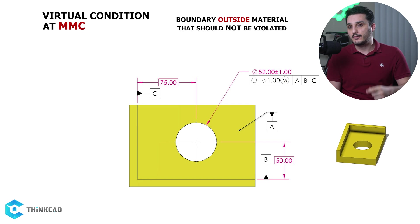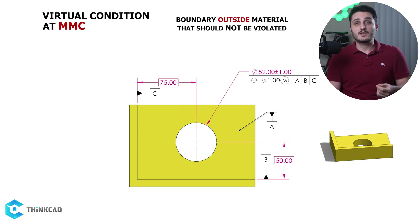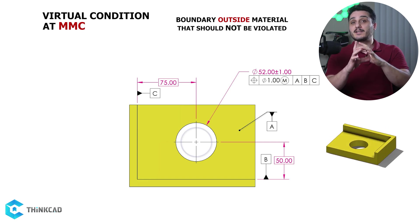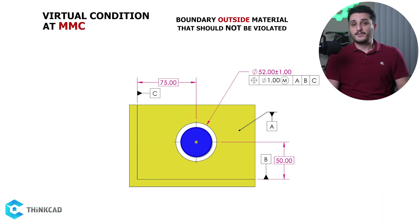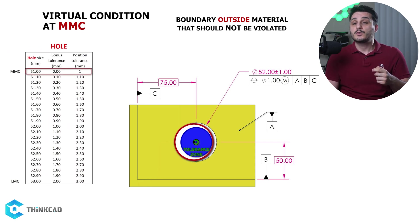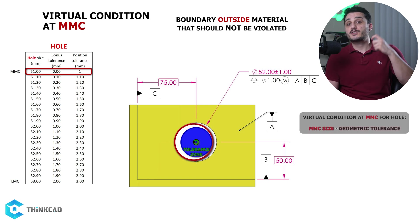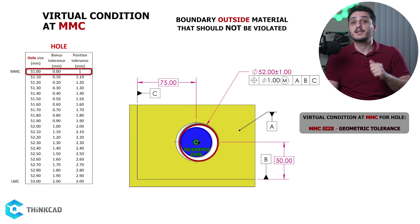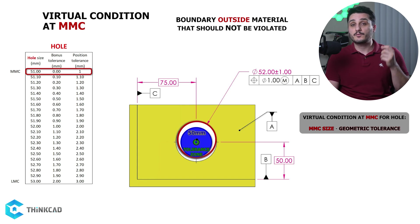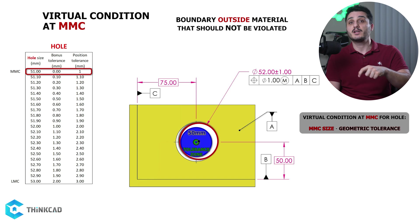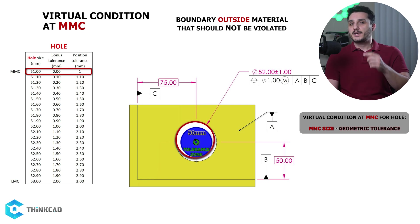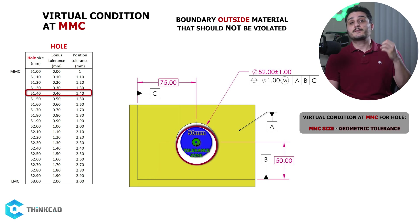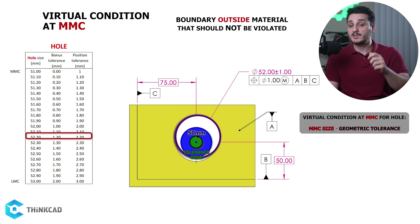Now let's go over our other part with the hole. This is very similar to our first case, with the only difference being that our virtual condition is inside our hole. If you try to have a guaranteed fit, a hole at its worst case — which means being at MMC and offset as much as it can be — creates an equivalent boundary for assembly. Our virtual condition here is 50 millimeters because the combined effect of our worst size, which is MMC of 51mm, and worst position, which is a tolerance of 1mm, gives us a 50mm boundary at true position. For any hole size, if you subtract position tolerance from the hole size, you get to the same 50mm boundary.